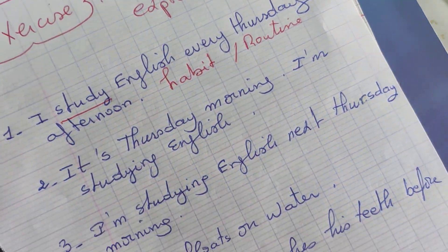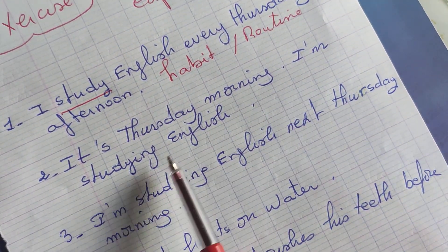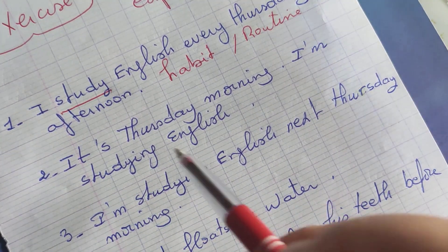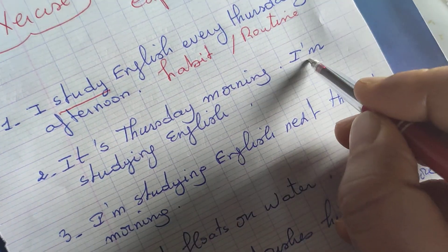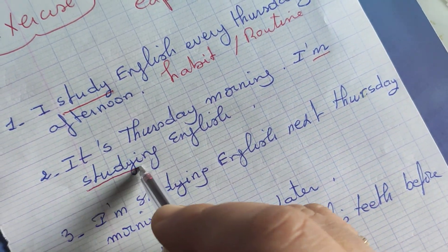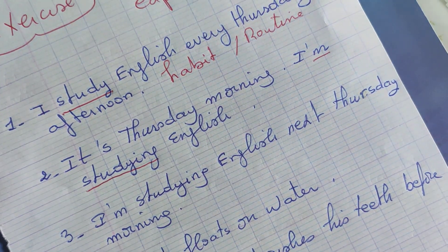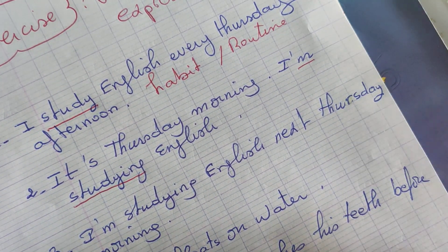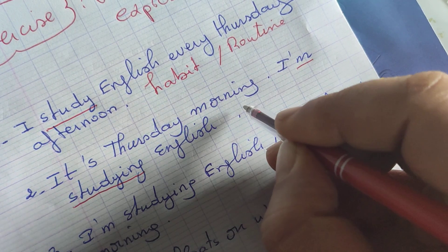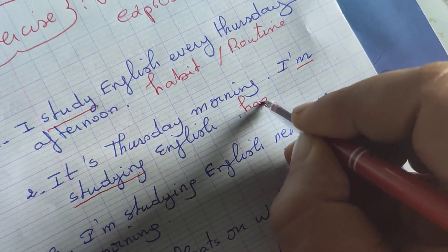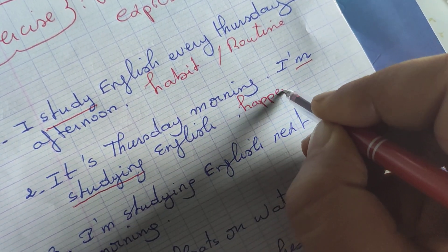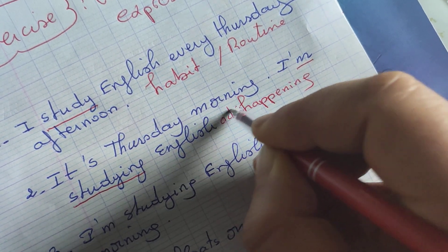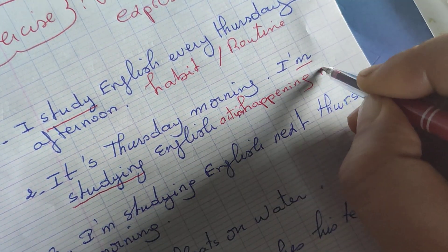Number two: 'It's Thursday morning. I'm studying English.' Here I have 'I'm studying' — it's the present continuous. But is it an action happening now or a future arrangement? Yes, it's an action happening now. Number three: 'I'm studying English next Thursday morning.' Here I have the present continuous — is it happening now or in the future? Yes, of course, it is the future.